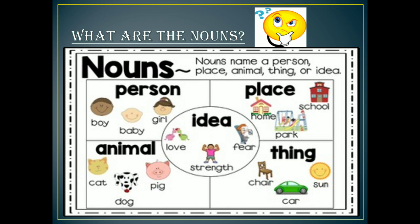The first question which arises in our mind is: what are the nouns? First we should know what are the nouns. So nouns are everywhere — whatever we see, whatever we observe, even we ourselves are nouns. Nouns name a person, place, animal, thing, or any idea. All the persons, places, animals, things, and even ideas — meaning feelings or whatever we think — they all are nouns and come in the category of noun.